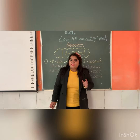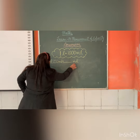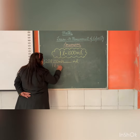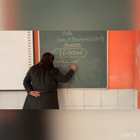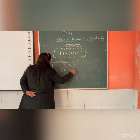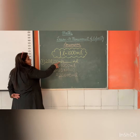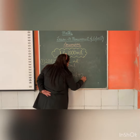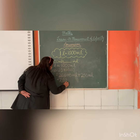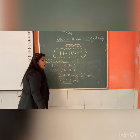Now let's see some other examples. If we are given 20 litres 250 milliliter and we have to convert it into milliliter, we know 1 litre is equal to 1000 milliliter, so 20 litres equals 20 multiplied by 1000, that is 20,000 milliliter. We already have 250 milliliter, so we add that to get the answer: 20,250 milliliter.